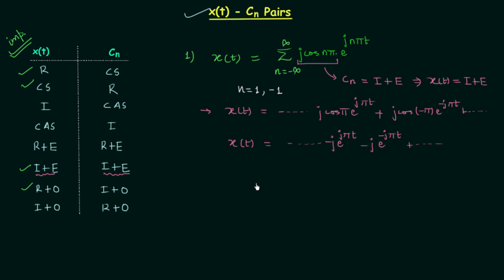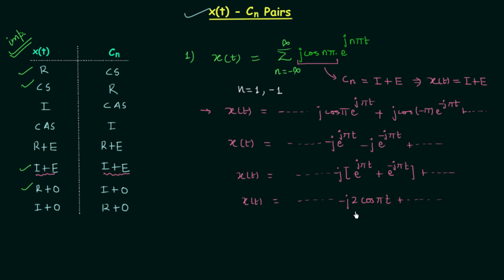Taking minus j as common, we have xt equal to −j times (e^(jπt) + e^(−jπt)). Since e^(jπt) + e^(−jπt) equals 2·cos(πt), we get xt equal to −2j·cos(πt). We can clearly see xt is imaginary because of the j, and it is even because of the cosine function. So we have successfully proved that when cn is imaginary plus even, xt is also imaginary plus even.